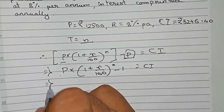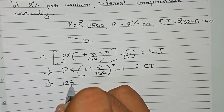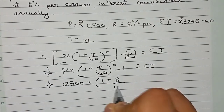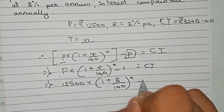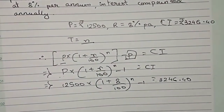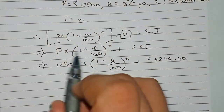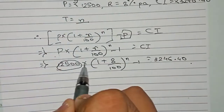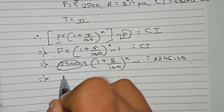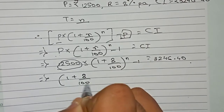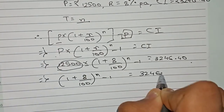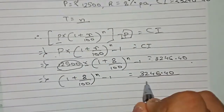Now substituting the values: 12500 × (1 + 8/100)^n − 1 = 3246.40. We take 12500 to the other side as division, so it becomes (1 + 8/100)^n − 1 = 3246.40 / 12500.